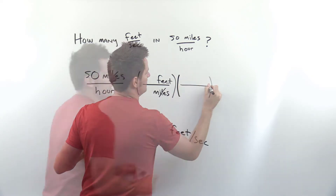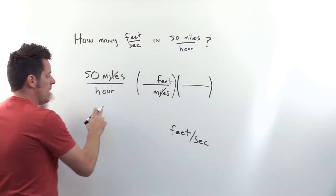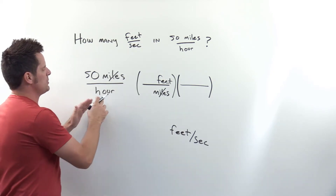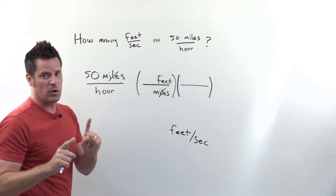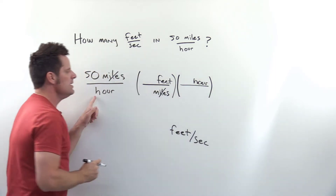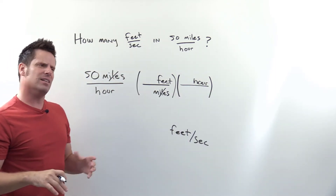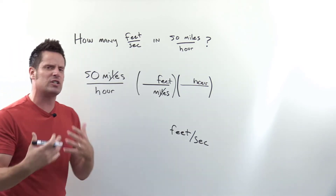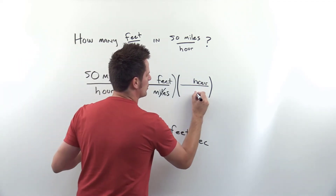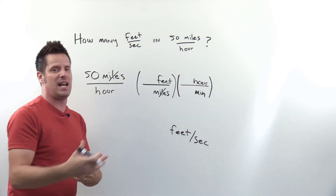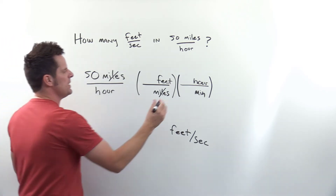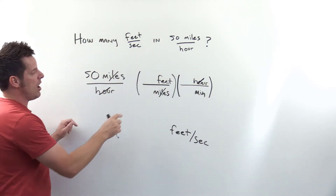We need to get to seconds, and this is a tricky situation — we have hours as a denominator unit to cancel, so we put hours in the numerator of the next parentheses. We need to get rid of hours. Rather than going directly to seconds, we can relate hours to minutes first. You can go directly from hours to seconds if you know that conversion, but going through minutes shows the long way. Unit-wise, hours cancel and we're now at feet per minute.